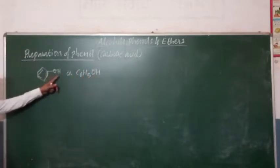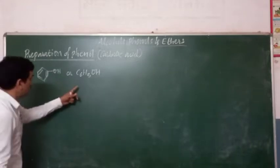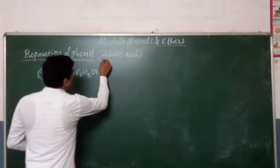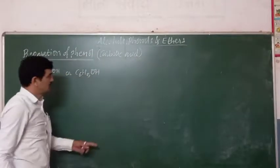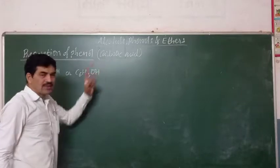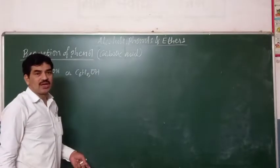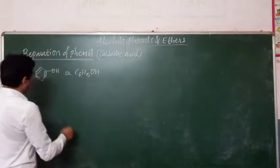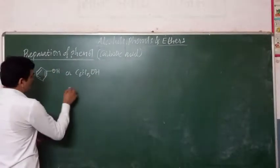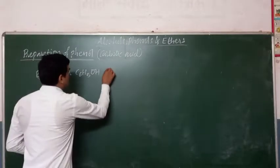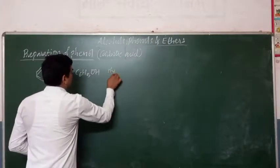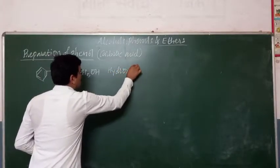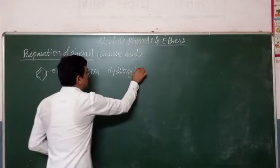The OH group should be directly attached to the benzene ring — this is phenol. It is also known as carbolic acid because it is acidic in nature, and it is also known as hydroxybenzene.